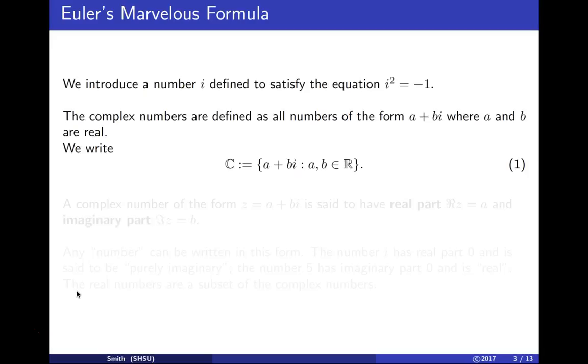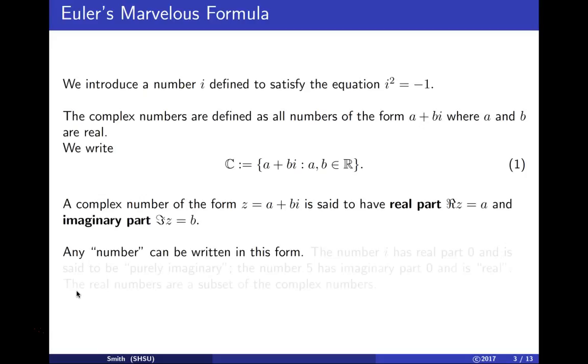We write ℂ = {a + bi : a, b ∈ ℝ}. A complex number of this form has real part a and imaginary part b. Any number we use in mathematics can be written in this form and viewed as a complex number.